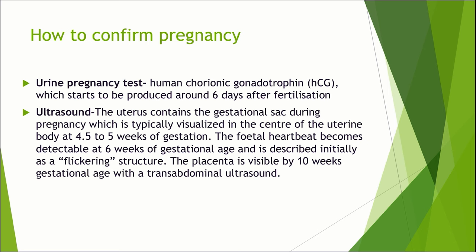The next common question is how will you confirm pregnancy? Pregnancy can be confirmed by two common means: first is the urine pregnancy test, and second is by ultrasound. In the urine pregnancy test, we detect HCG or human chorionic gonadotrophin, which is produced after 6 days after fertilization. The presence of HCG in the urine, detected by urine pregnancy test kits which can be performed even at home, can confirm a pregnancy.